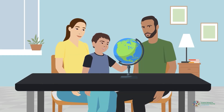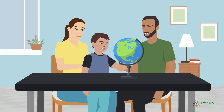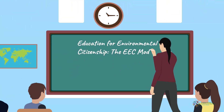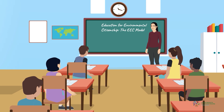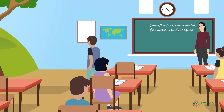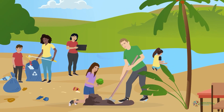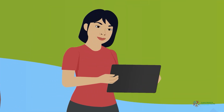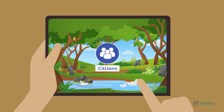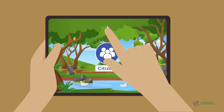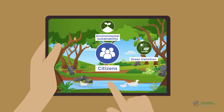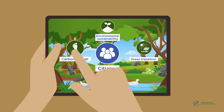In what kind of environment will our children live in tomorrow? The answer to this question largely involves the dimension of education. Education plays an important role in shaping students' personal development and competencies for environmental citizenship. As existing and future citizens, students play a crucial role in achieving environmental sustainability, green transition, circular economy and a carbon-neutral future.